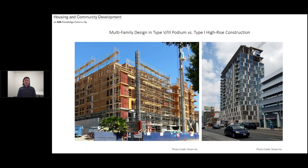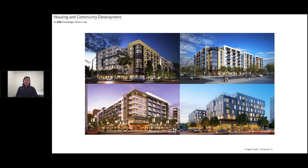You've seen a lot of these probably going up near you — a concrete podium that may have retail on the ground floor, underground parking or above-grade parking, and four to five stories of structure above. High-rise construction is all done in Type 1, steel and concrete. In many of our growing cities, there has been a proliferation of medium to high-density housing, typically five to seven stories with a mix of concrete and wood construction — what we call podium.